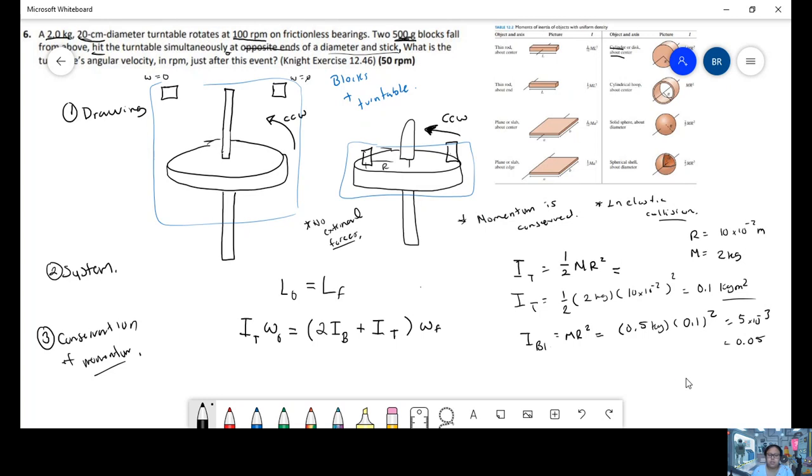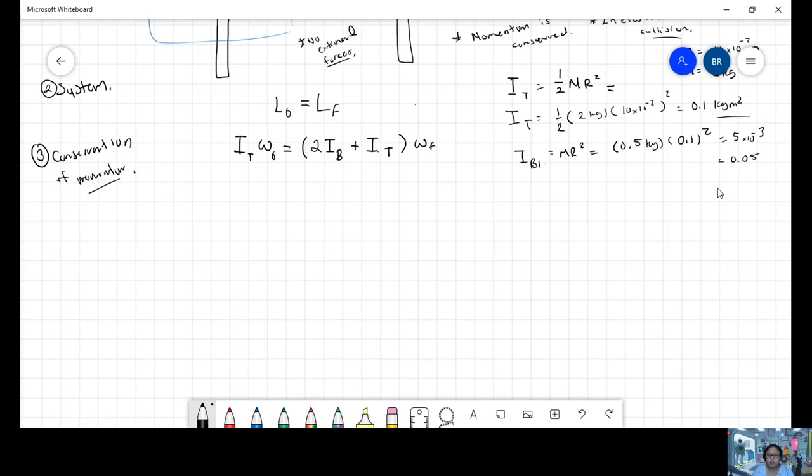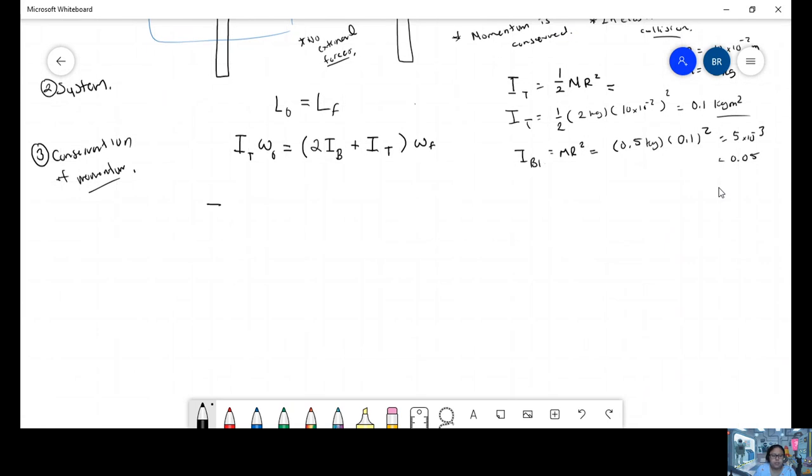So we have the moments. We have the initial RPM. So let's look for the final one. I have inertia times angular velocity initial. And I'm going to divide this on both sides of the equation, so I'm going to have two of the blocks plus the turntable times initial speed equal to the final velocity.